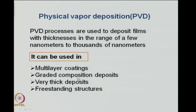Graded composition basically means that up to a certain thickness you have one composition, and then as you go deeper into the film, the composition is varying — that is why it is called a graded composition film. You can also have multilayer coatings, meaning one layer of material X on top of material Y, and then material Z — making different layers of different materials using PVD processes.